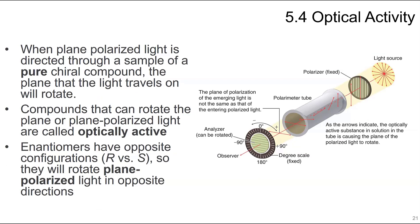When plane polarized light is directed through a sample of a pure chiral compound, the plane that the light travels on will rotate. There's the light source, then the polarizer that is fixed, and it goes through this tube. Your compounds will rotate in a certain direction on a certain degree scale. Compounds that can rotate plane polarized light are called optically active.